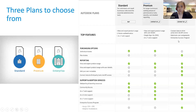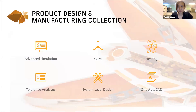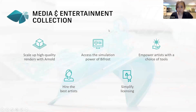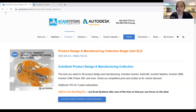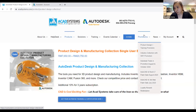Remember when I mentioned there are three collections available for you? They are the AEC (Architecture, Engineering and Construction) Collection, the Product Design and Manufacturing Collection, and the Media and Entertainment Collection. Those are the three you can choose from. Currently they have ongoing promotions, so go ahead to our website and check that out in the promotions section.